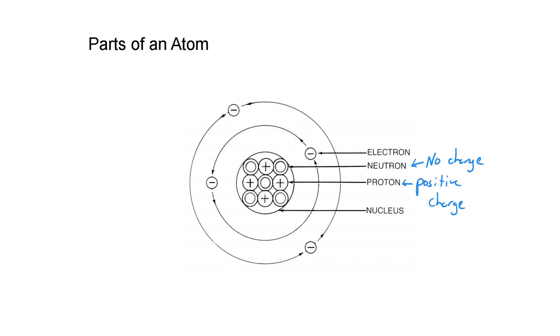But spinning around the outside of that are the electrons, which have a negative charge. Now, protons are much more massive than electrons, but they both carry the same amount of charge, just in opposite directions.